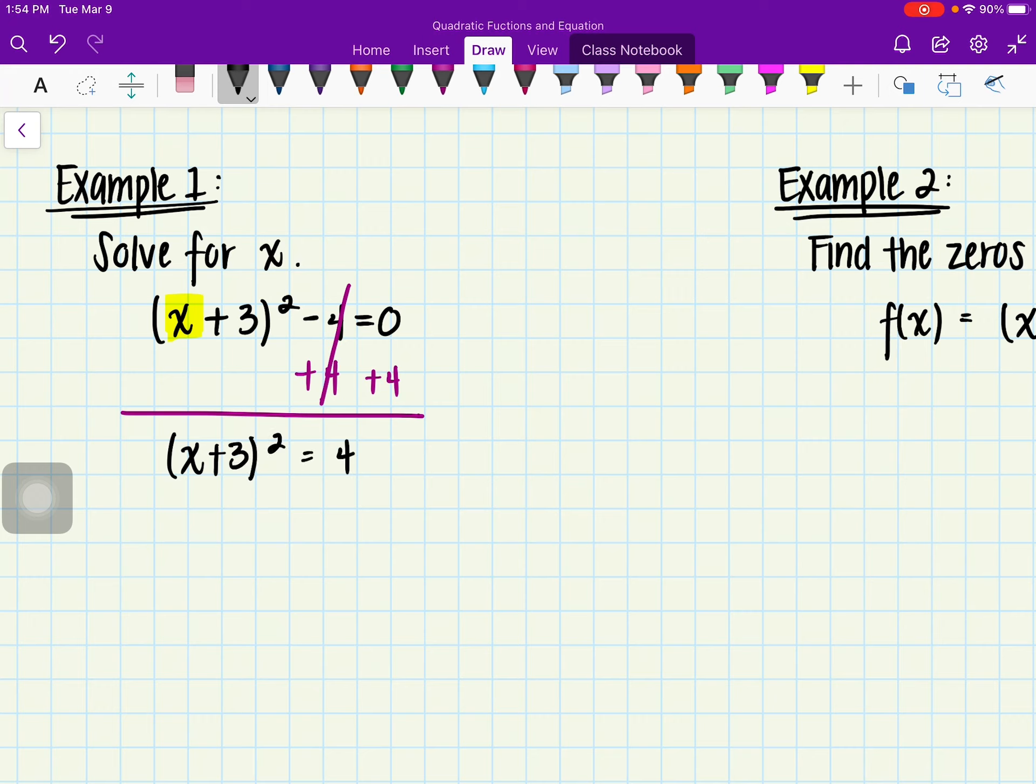Now my next step in this case is I actually have a squared. Now I need to get rid of the squared and in order to do that I need to do the opposite. Now the opposite of a squared is actually the square root. So I'm going to go ahead and take the square root of both sides. Now on my left hand side this actually cancels both the squared and the square root. And I'm left with x + 3 equals in this case a plus or minus 2.